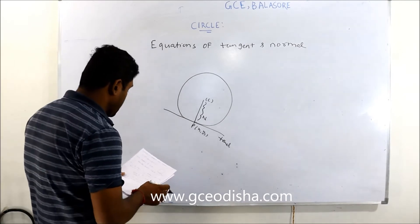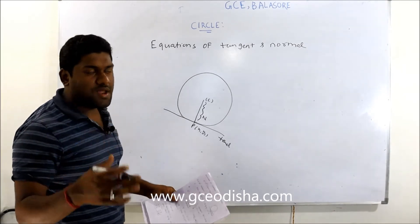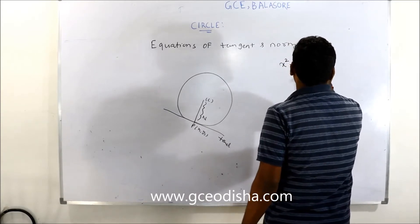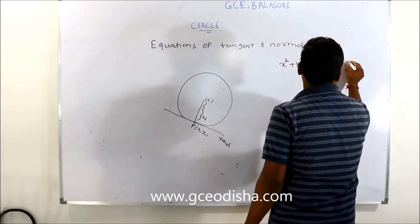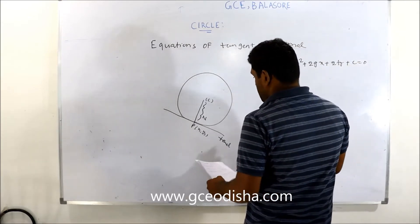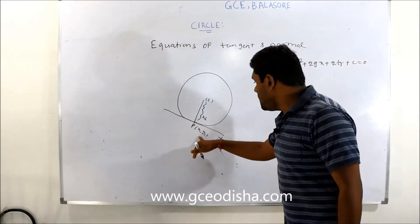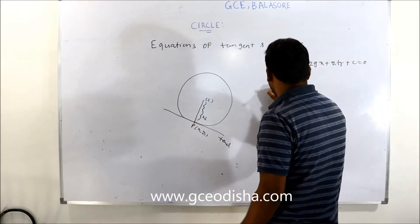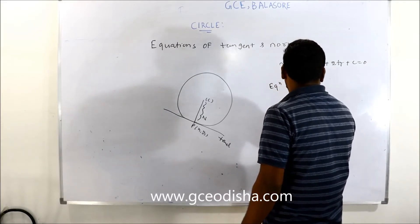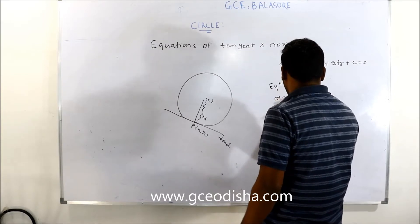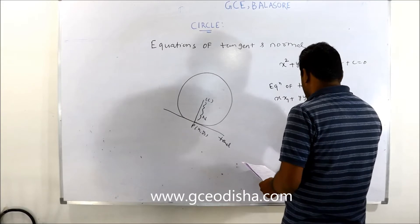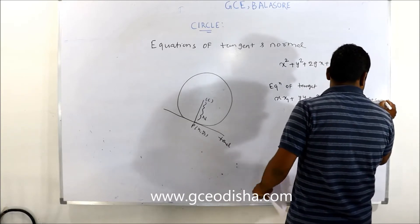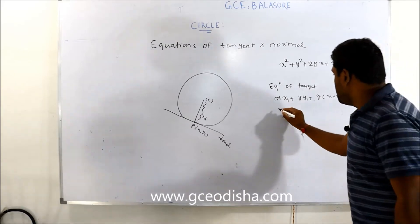I'll tell you how to find the equation of the tangent when the equation of the circle is given. The circle equation is x² + y² + 2gx + 2fy + c = 0. They ask to find the equation of the tangent at the point (x1, y1). The equation of the tangent is: x·x1 + y·y1 + g(x + x1) + f(y + y1) + c = 0.